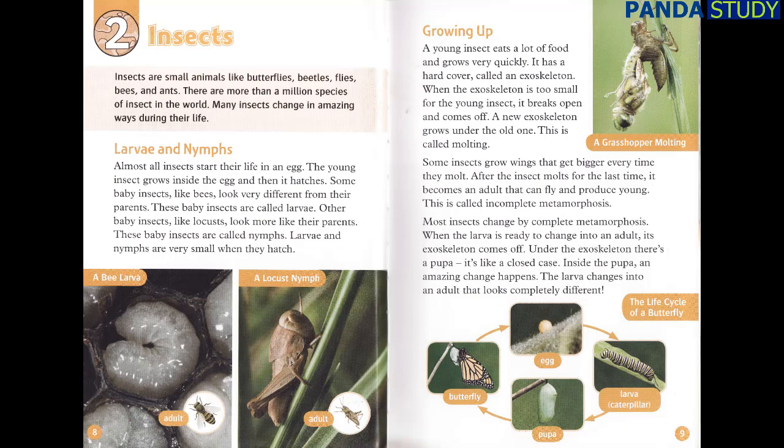Most insects change by complete metamorphosis. When the larva is ready to change into an adult, its exoskeleton comes off. Under the exoskeleton, there's a pupa — it's like a closed case. Inside the pupa, an amazing change happens. The larva changes into an adult that looks completely different.